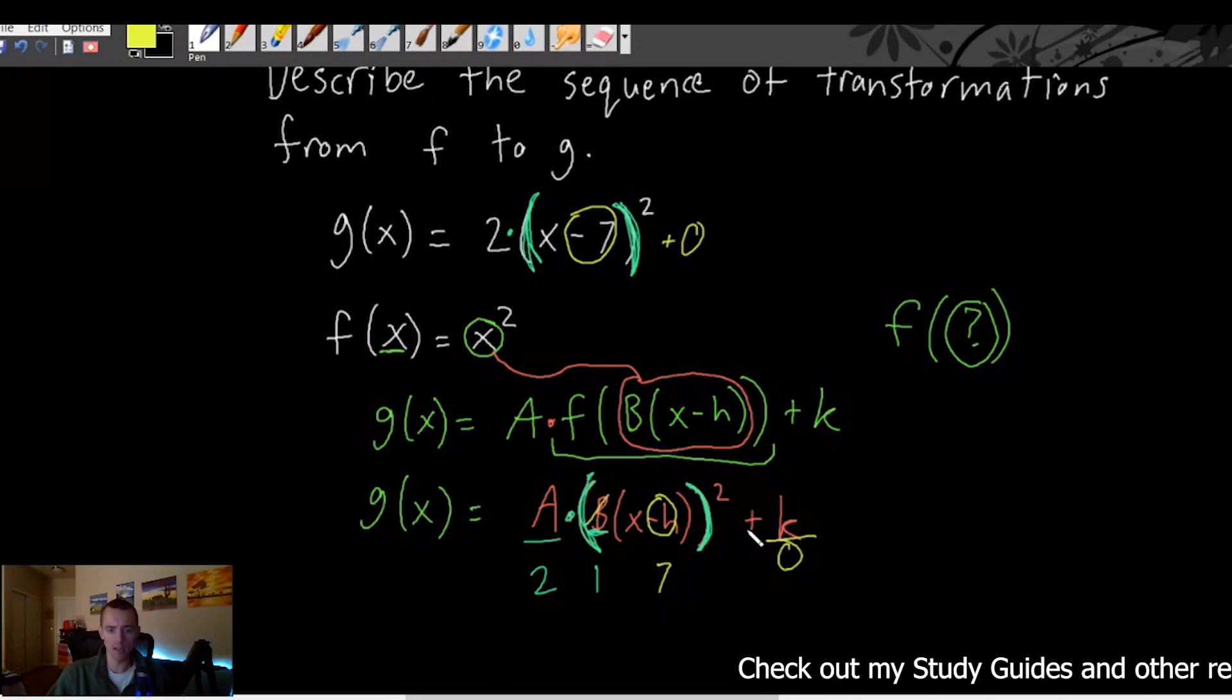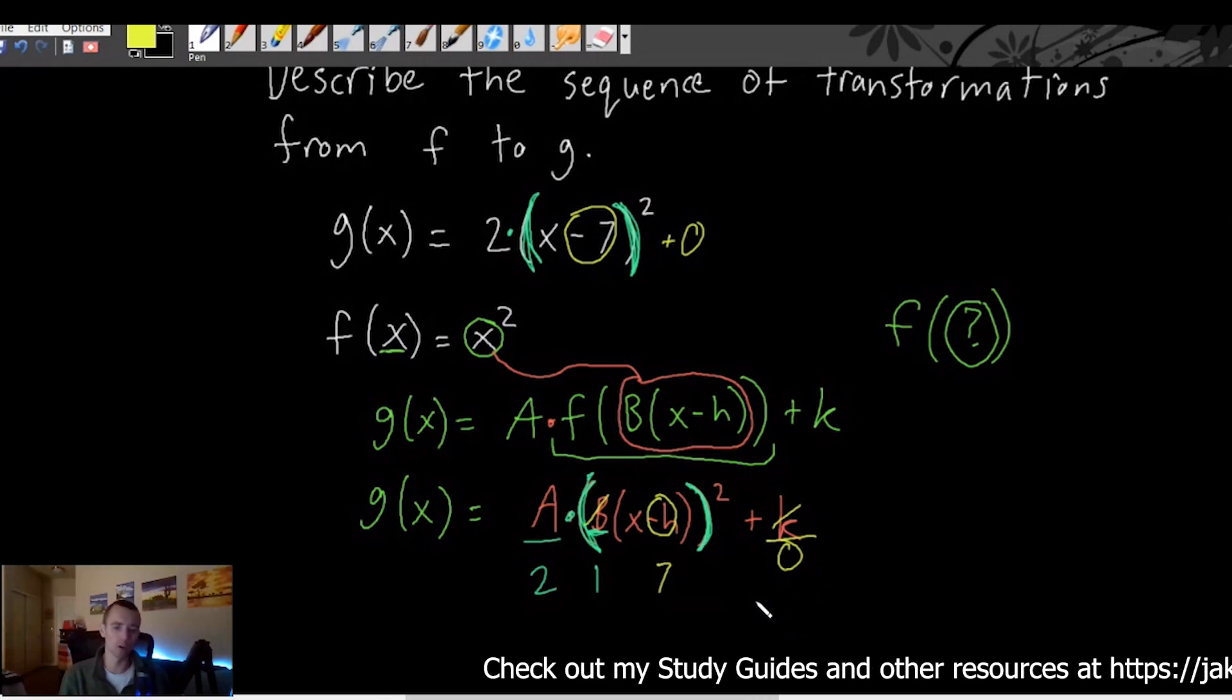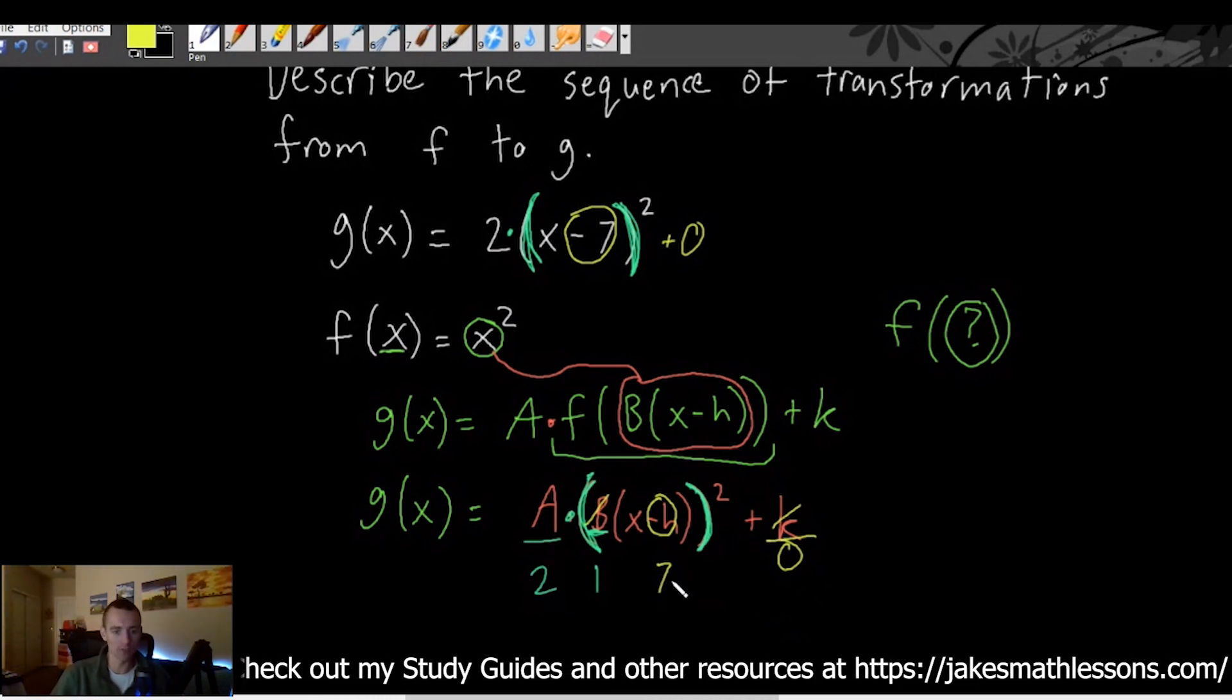So basically our B and our k are not really applying any sort of transformations here. We don't really have to worry about those. However we do have an A value of 2 and an h value of 7.